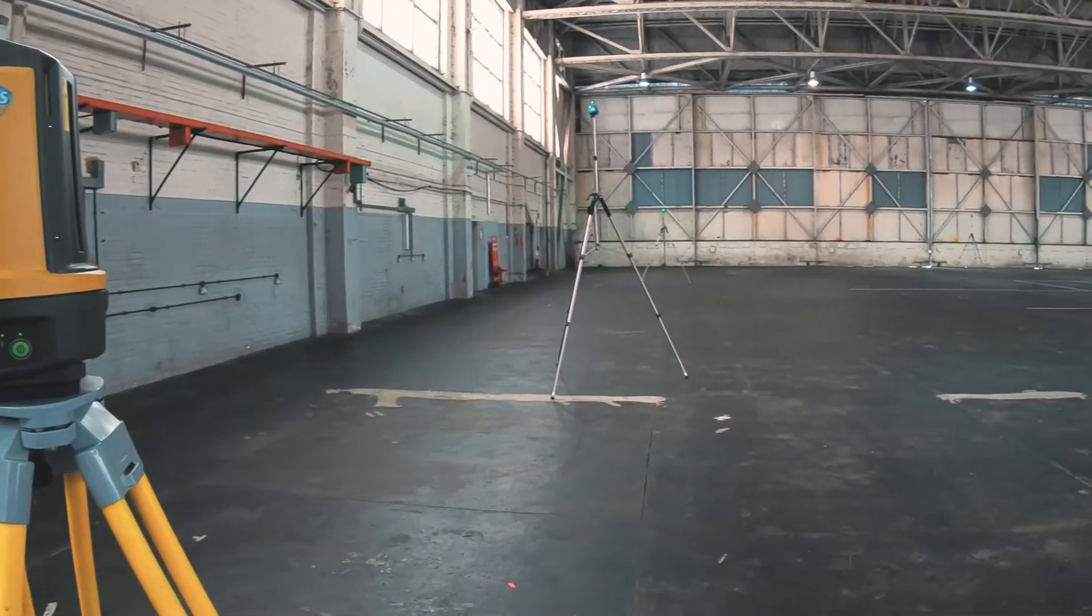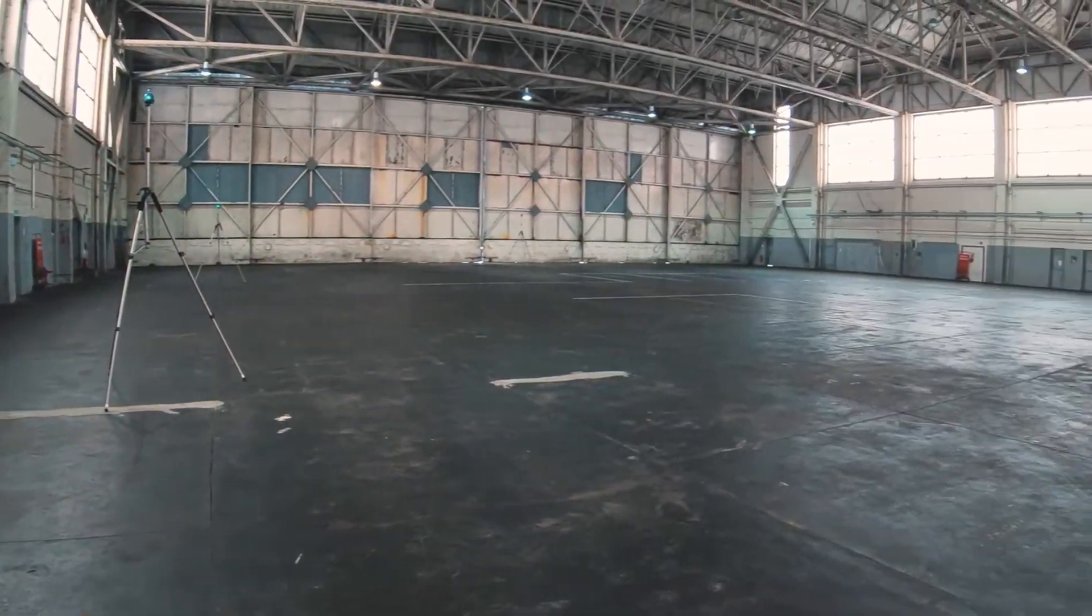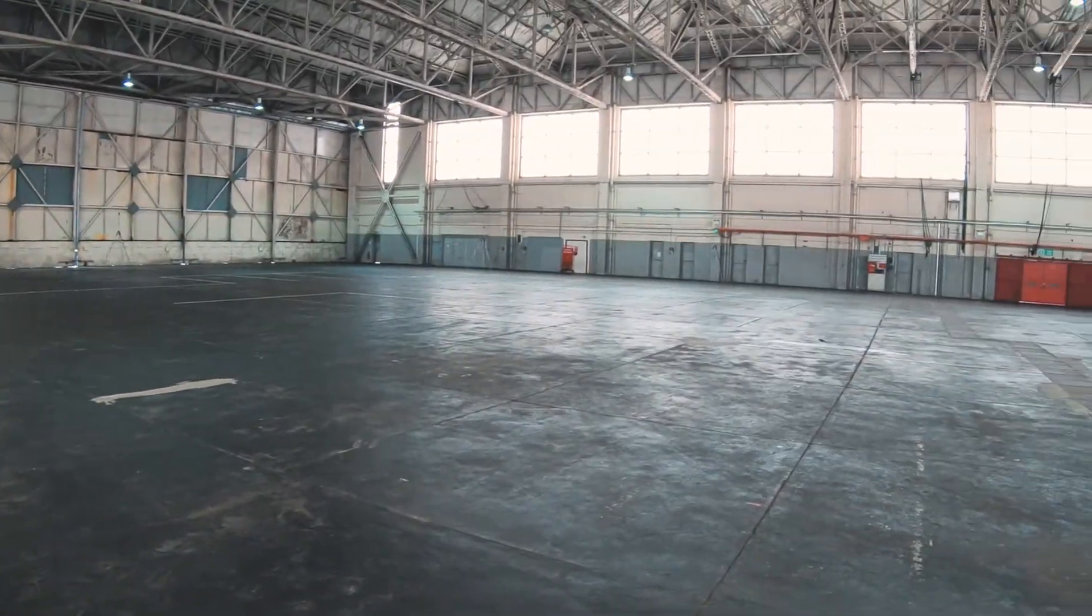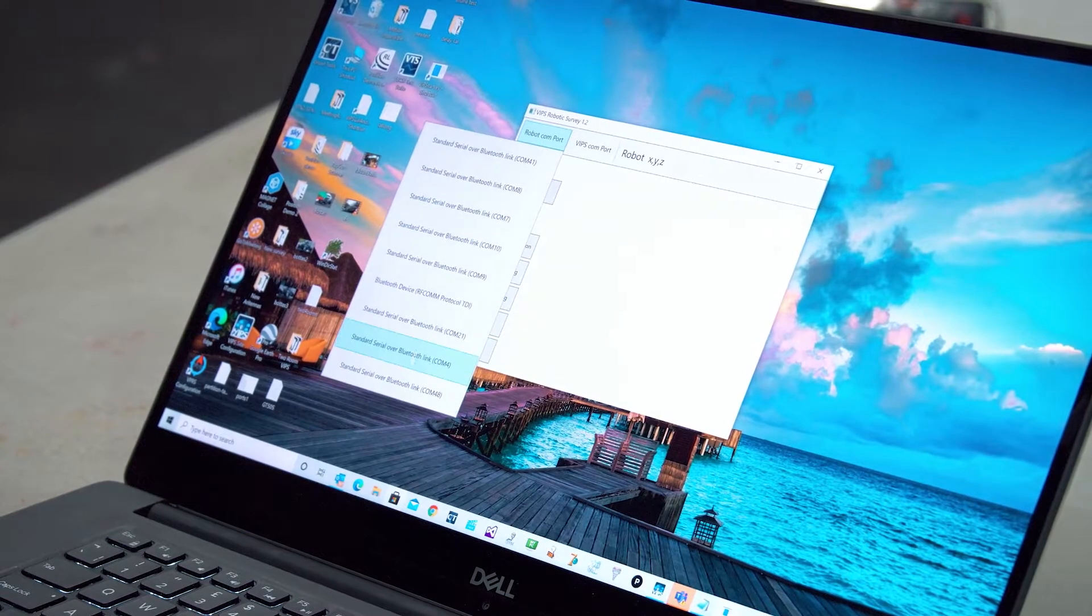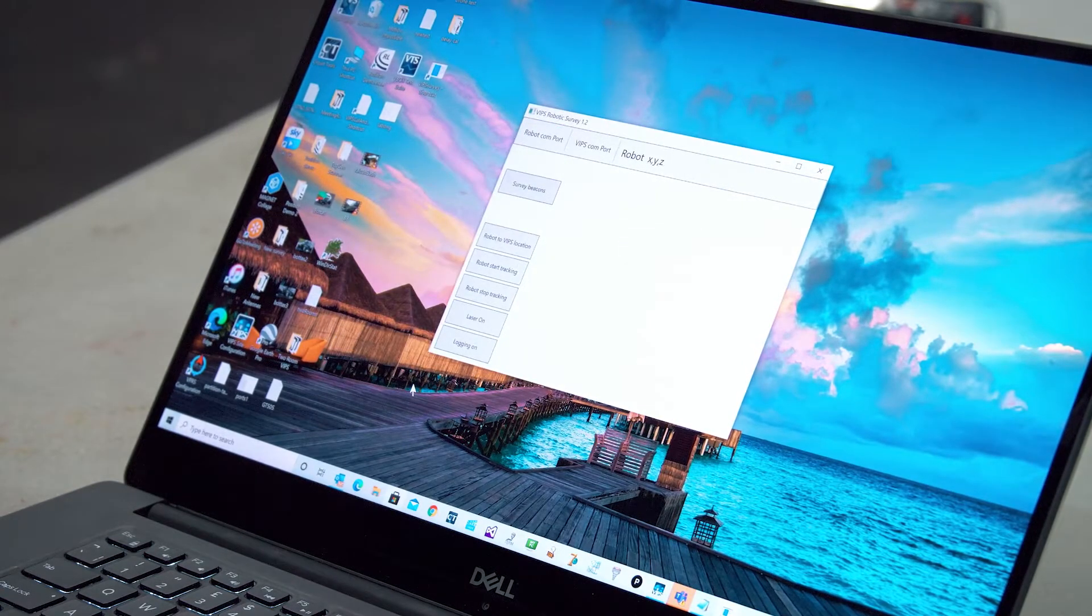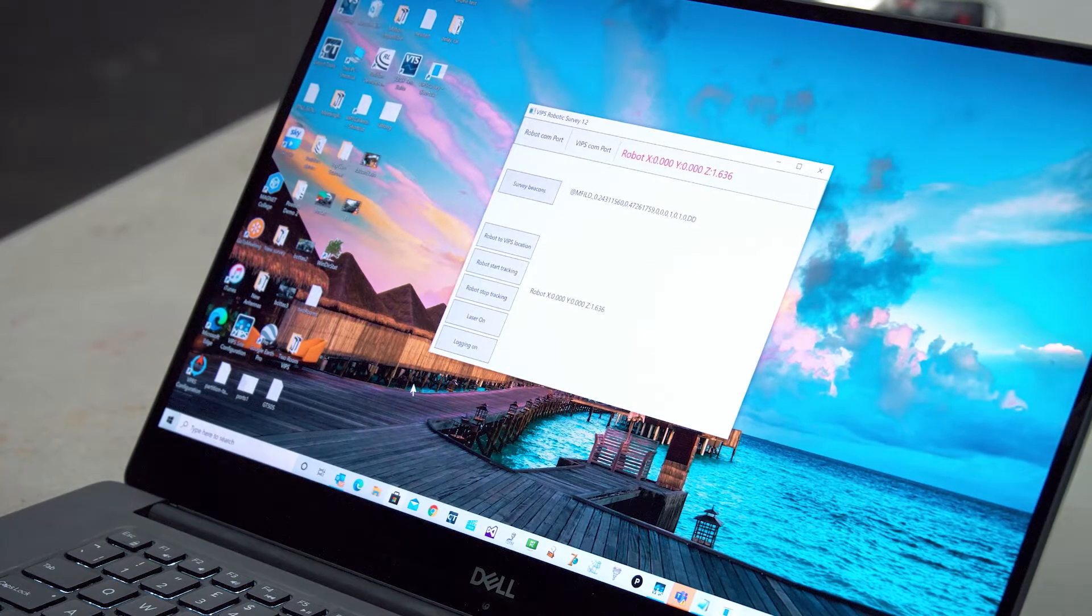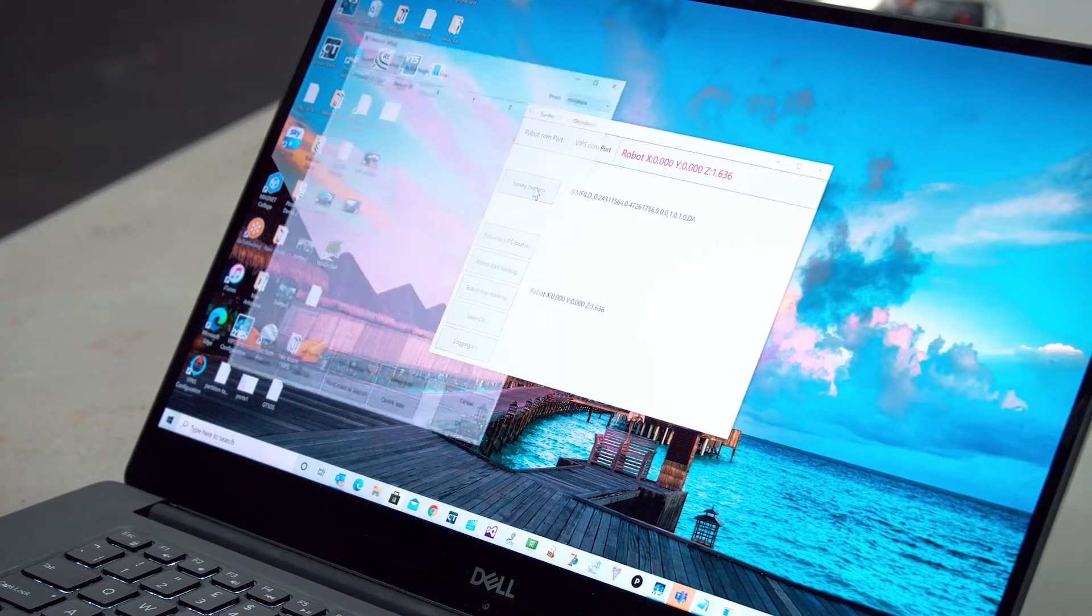Note that the Total Station needs to have a clear line of sight to all of the beacons. Next, pair the Total Station to your PC via Bluetooth. After communication is established, click on Survey Beacons and the Beacon Setup window will appear.